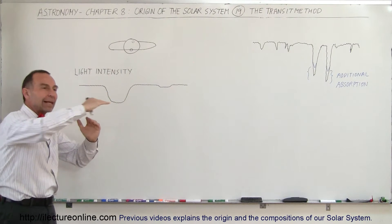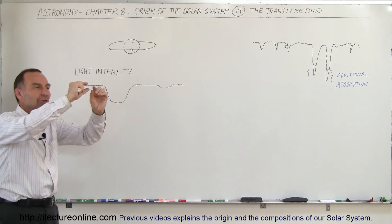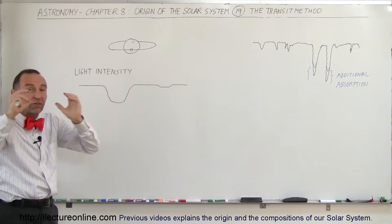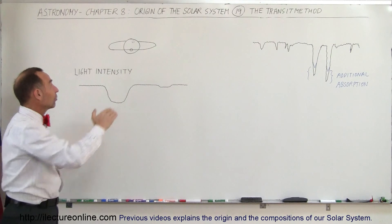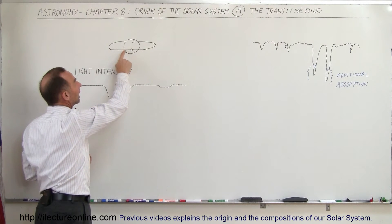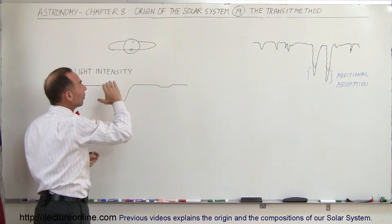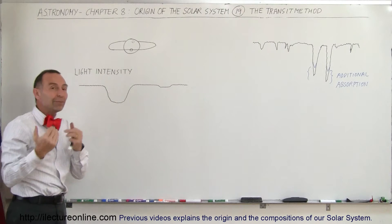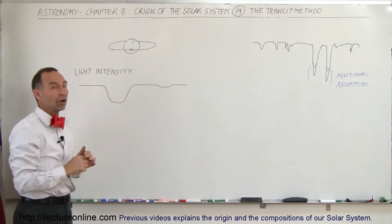If the orbit of the planet takes it in such a line so that it moves in front of the disk from our perspective, that's what we call a planetary transit. And so when a planet moves in front of the disk of the star, the light coming from the star will be dimmed somewhat because we don't see that portion of the star.